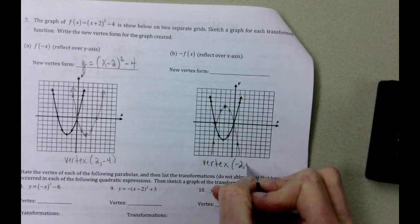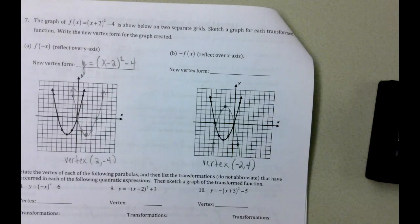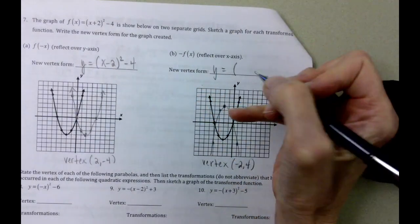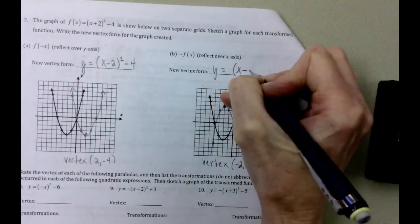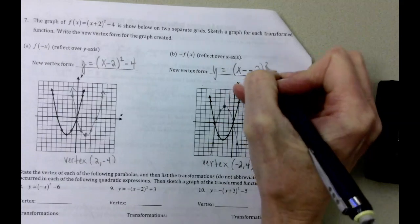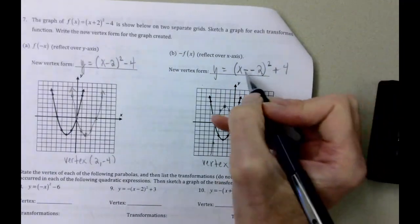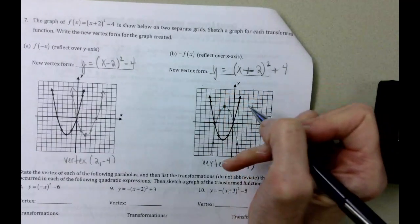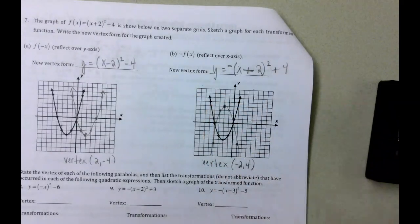And if we write this in the vertex format, it's (x - (-2))² + 4. Double negative becomes a positive. And then we need the reflection here, which is there.